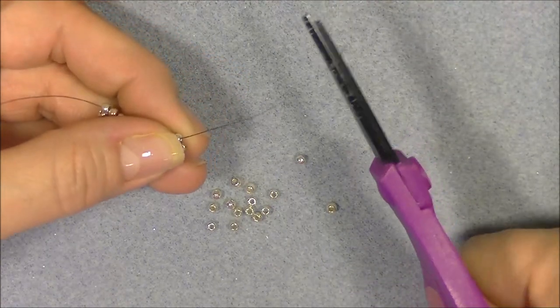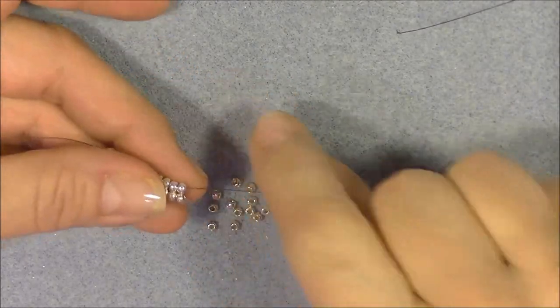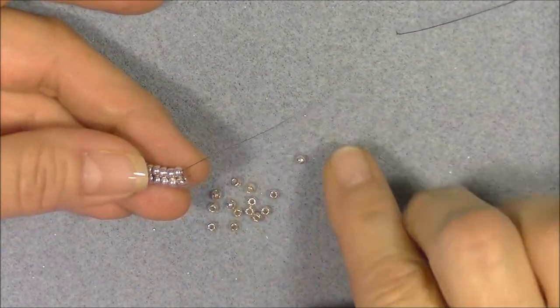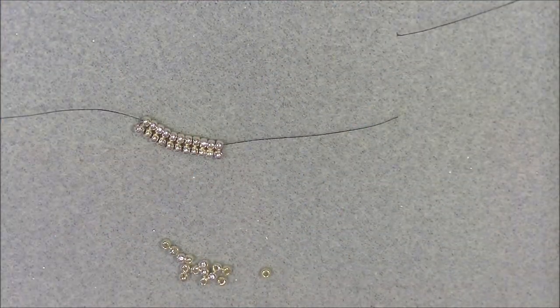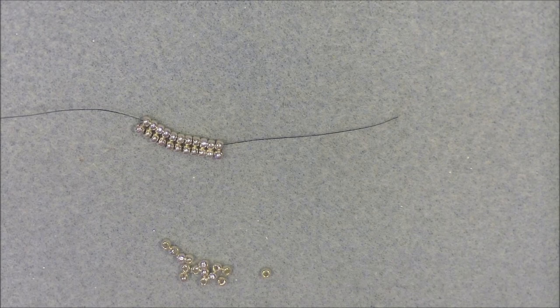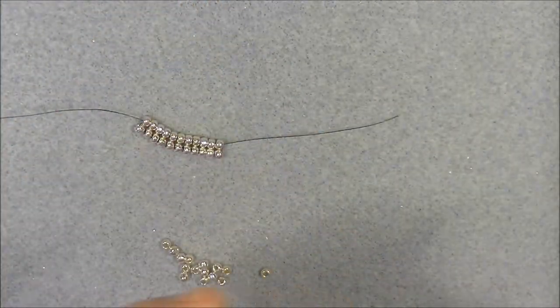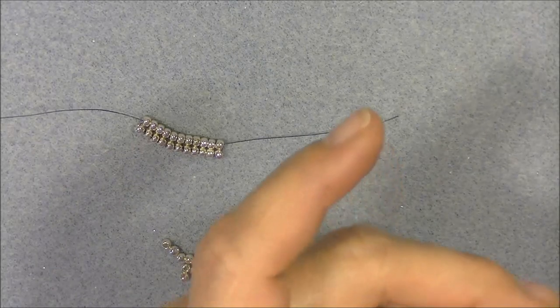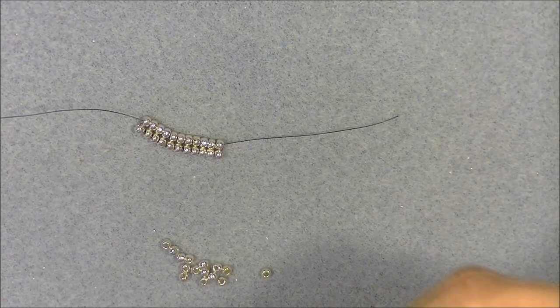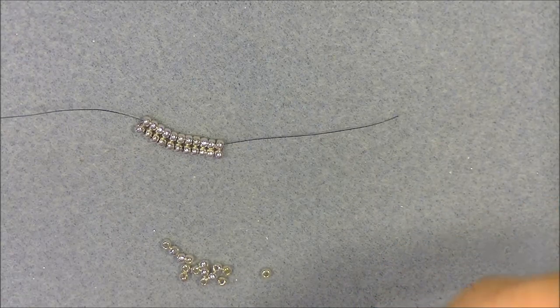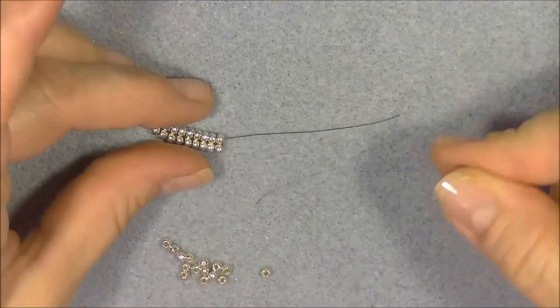So anyway I'm going to cut my thread here and I am now really short on thread and I need to add a piece of thread to my project. So what I'm going to do is get another piece of thread ready and I am going to do this close to the beads on my project so I don't have to draw the knot that I'm going to create through my beads many many times.